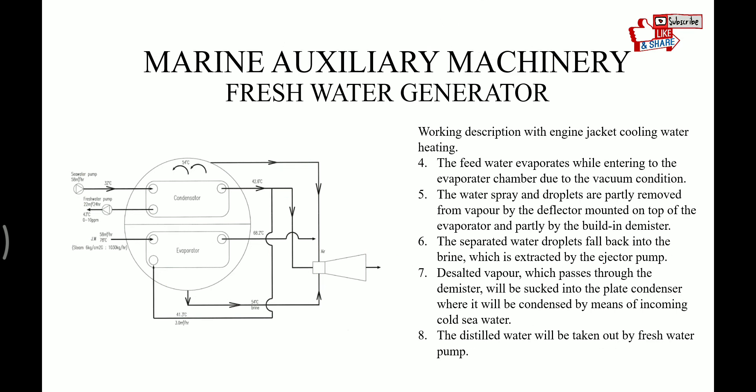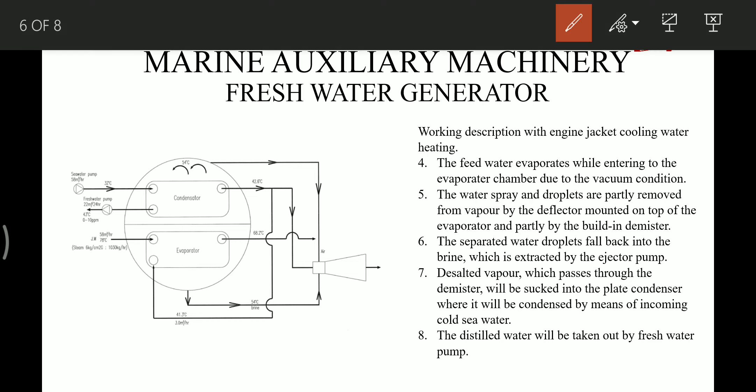The feed water evaporates while entering the evaporator chamber due to vacuum conditions. The water spray and droplets are partially removed from the vapor by a deflector mounted on top of the evaporator and partially by a built-in demister. The demister removes the droplets and salts that evaporate with the steam or vapors. The separated water droplets fall back into the brine, which is extracted by the ejector pump.